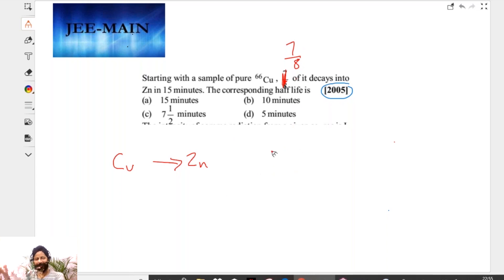Okay, the answer is D, it's 5 minutes. The answer is so easy. They call, you had some copper, right? Copper becomes zinc. They're saying in 15 minutes, 7/8 is gone. So in 15 minutes, 1/8 remains. Doesn't that mean 1/8 remains? So how many half-lives? 3 half-lives. So after 1 half-life, 1/2 remains. After 2 half-lives, 1/4 remains. After 3 half-lives, 1/8 remains. 3 half-lives is 15 minutes, so 1 half-life is 5 minutes. Isn't it?